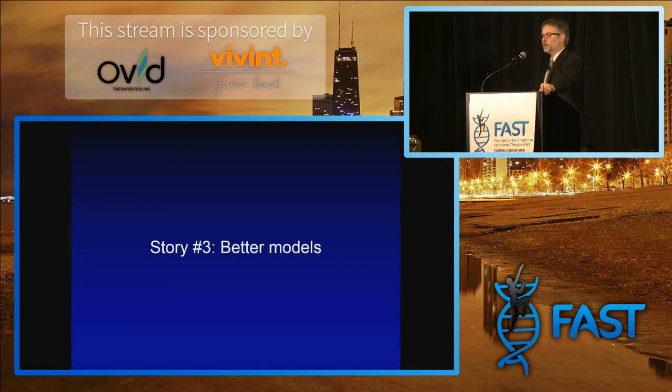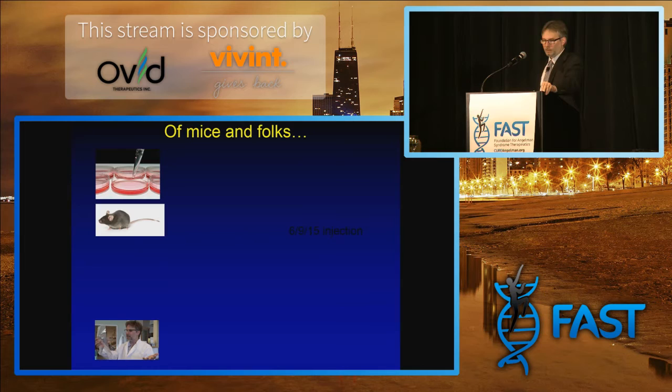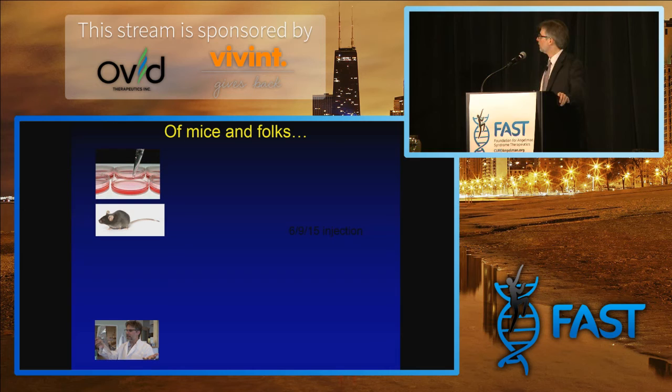Story number three is getting back to animal models. The experiments I've talked about today have all been in cell culture. There are certainly advantages of working with cells for learning and trying different things, but after that we really need to move into a live animal. You've heard a lot about the mouse studies now, and a lot of progress being made there.